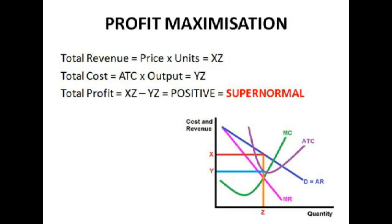The same as we looked at with perfect competition: for this monopoly situation, total revenue is price times units, which is X×Z. Total cost is average total cost times output, which is Y×Z. Total profit is total revenue minus total cost, which is X×Z minus Y×Z. We can see that X is quite a bit above Y, so we're making lots of profit — a positive level of profit, which is supernormal profit.